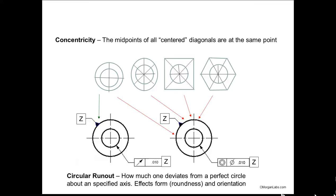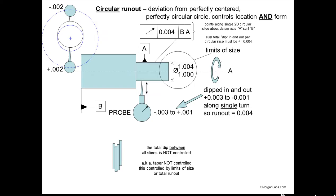Anyway, main thing is you have form tolerances as well as dimensional tolerances. Okay, here's another example of circular runout. So you have a part, you have two cylinders, and you want to keep them concentric and circular.